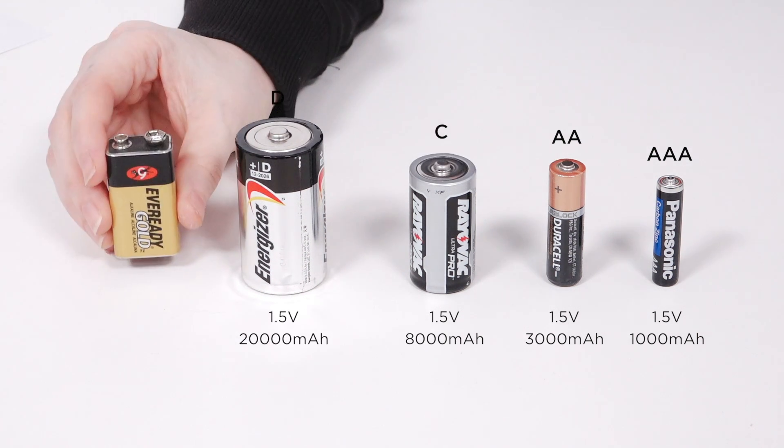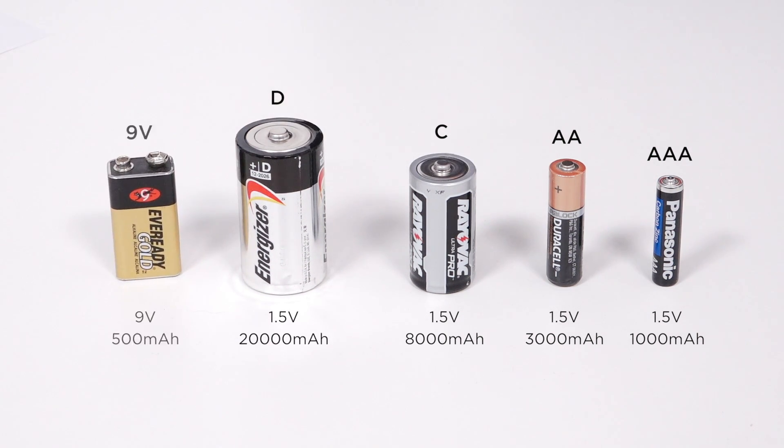Finally we've got the odd one out, the 9 volt cell. This one has a nominal voltage of 9 volts but the capacity is only 500 milliamp hours.